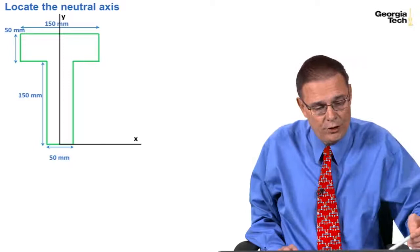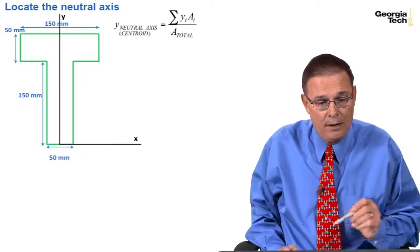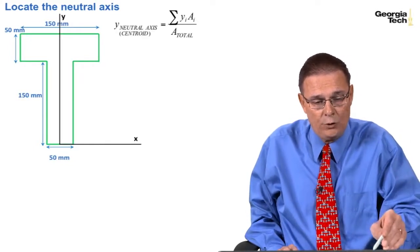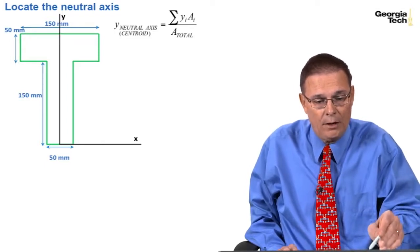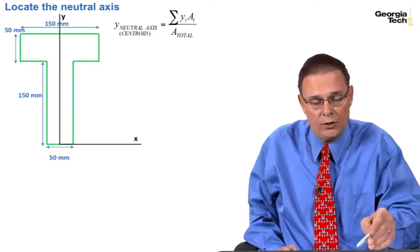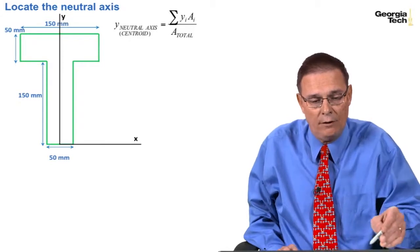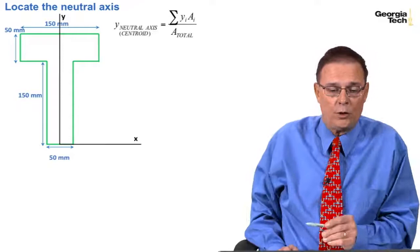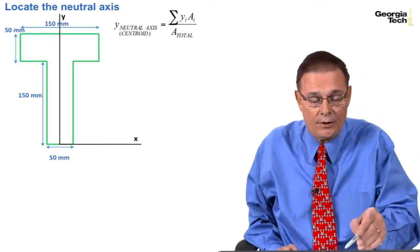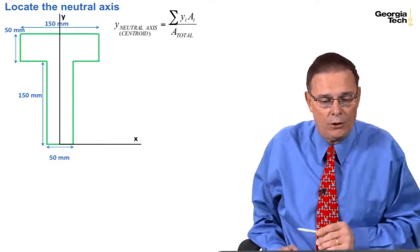And so I've used this axis as my datum. I know that I can find the neutral axis from the bottom, or the centroid, which is the summation of composite areas, the y to the neutral axis for each of the composite areas times the area, divided by the total area.